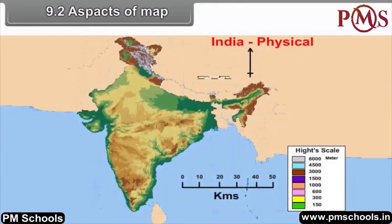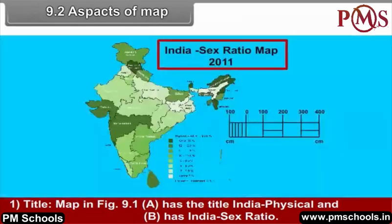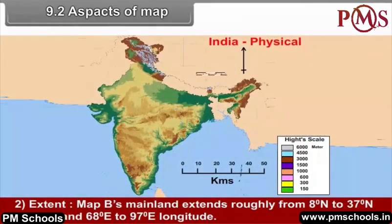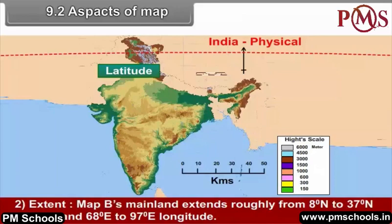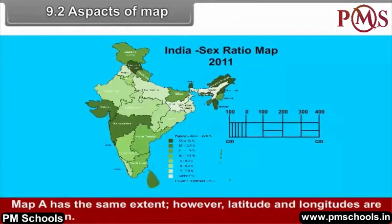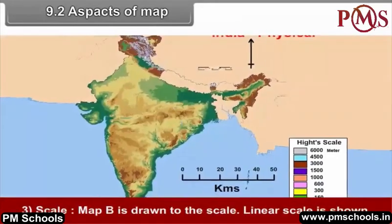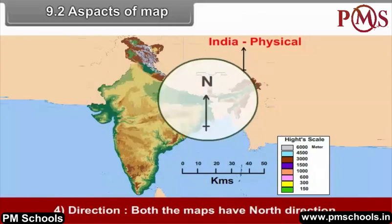9.2 Aspects of Map. 1. Title: Map in Figure 9.1A has the title 'India Physical' and Map B has 'India Sex Ratio'. 2. Extent: Map B's mainland extends roughly from 8° N to 37° N latitude and 68° E to 97° E longitude. Map A has the same extent, however latitudes and longitudes are not shown. 3. Scale: Map B is drawn to scale and a linear scale is shown. 4. Direction: Both maps have north direction.